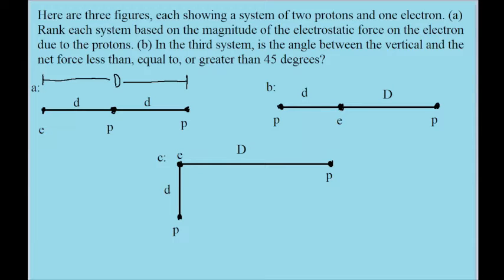Here's a problem related to electrostatic forces and Coulomb's law. We have three systems here, and each system contains an electron, labeled by an E, and two protons, each labeled by a P. The only difference between these systems is that they all have different arrangements.